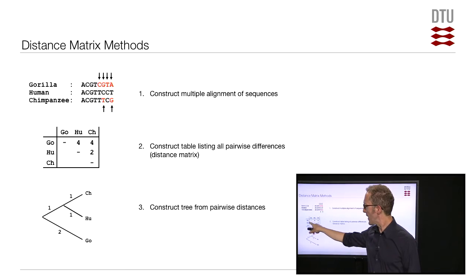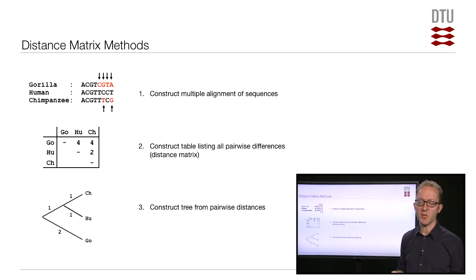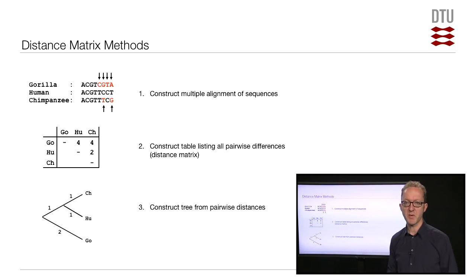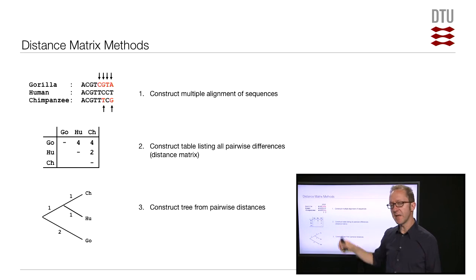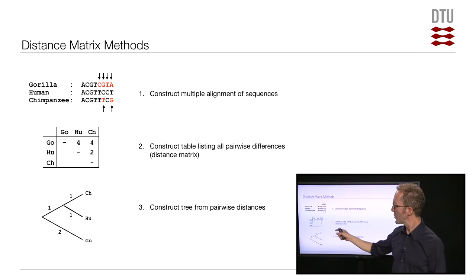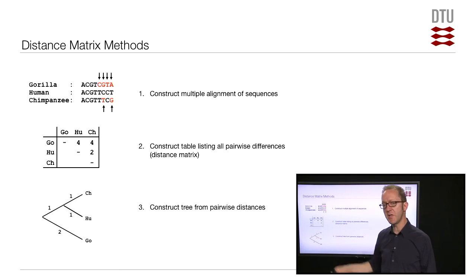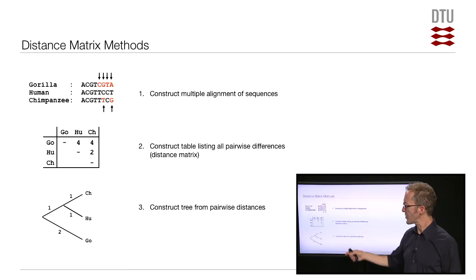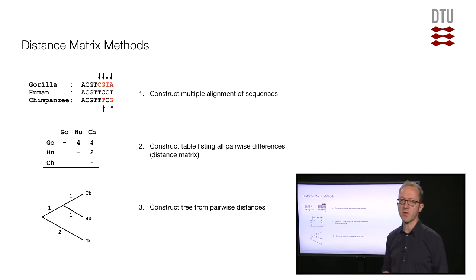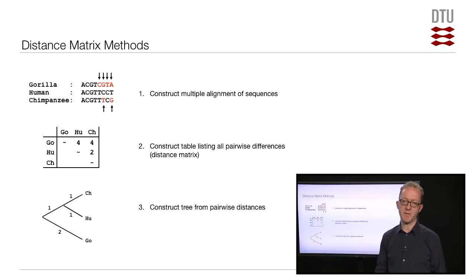The other half of the distance matrix is of course going to be the same as the first — it's a symmetric thing, so you only have to fill out one half of this matrix. Now, the idea in distance-based methods is that at this point we forget entirely about the original set of sequences. We focus just on the distance matrix, and the goal is to build a tree with branch lengths such that the distances measured along the tree correspond to the ones we actually observed from the alignment.